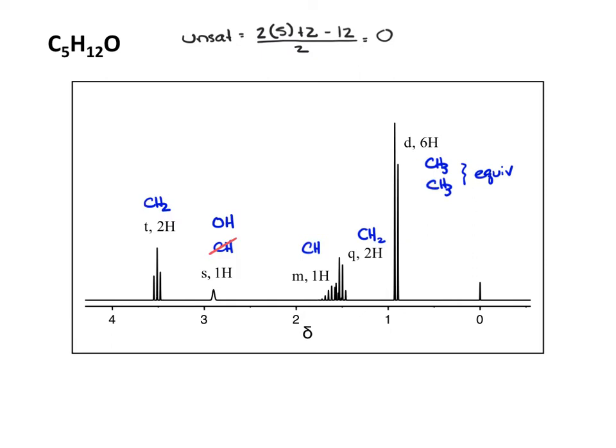We're good. We need 12 hydrogen. So we have 2, 3, 4, 5, 6, 7, 8, 9, 10, 11, 12. We're good there. We need an oxygen, and we have our oxygen. So we have all of our fragments.